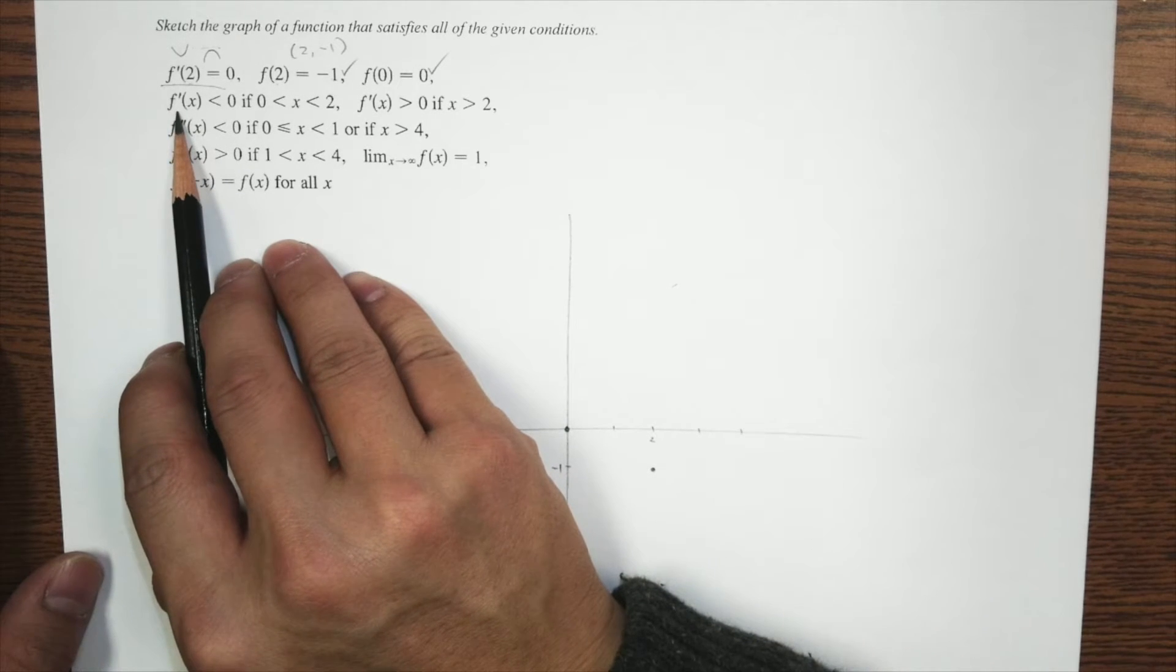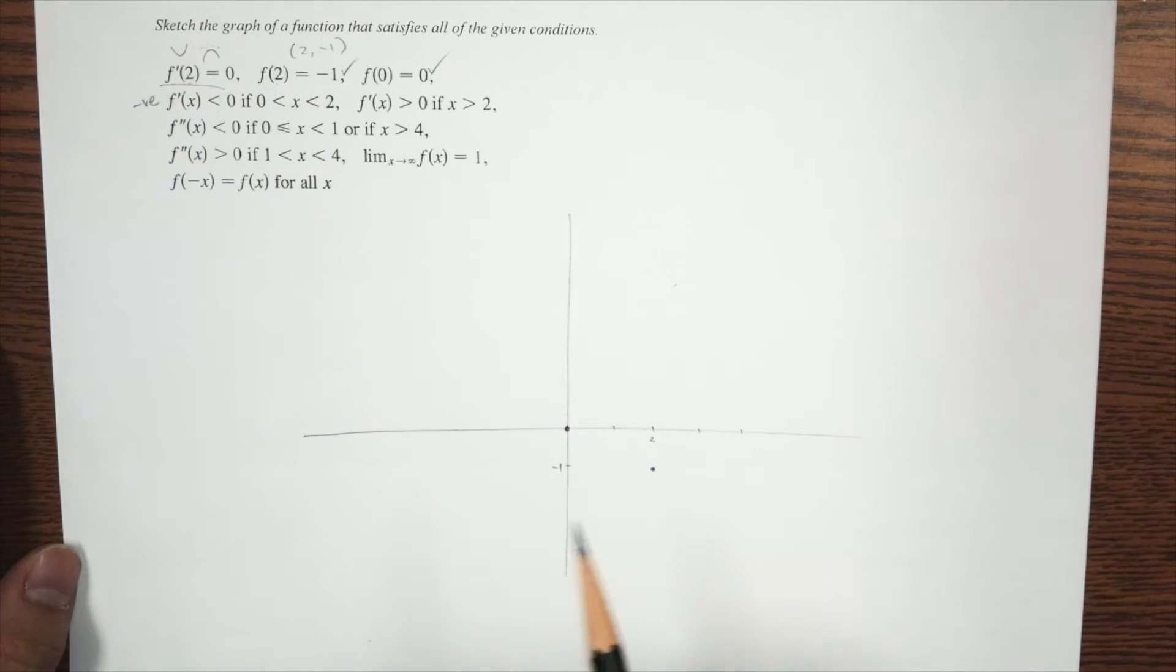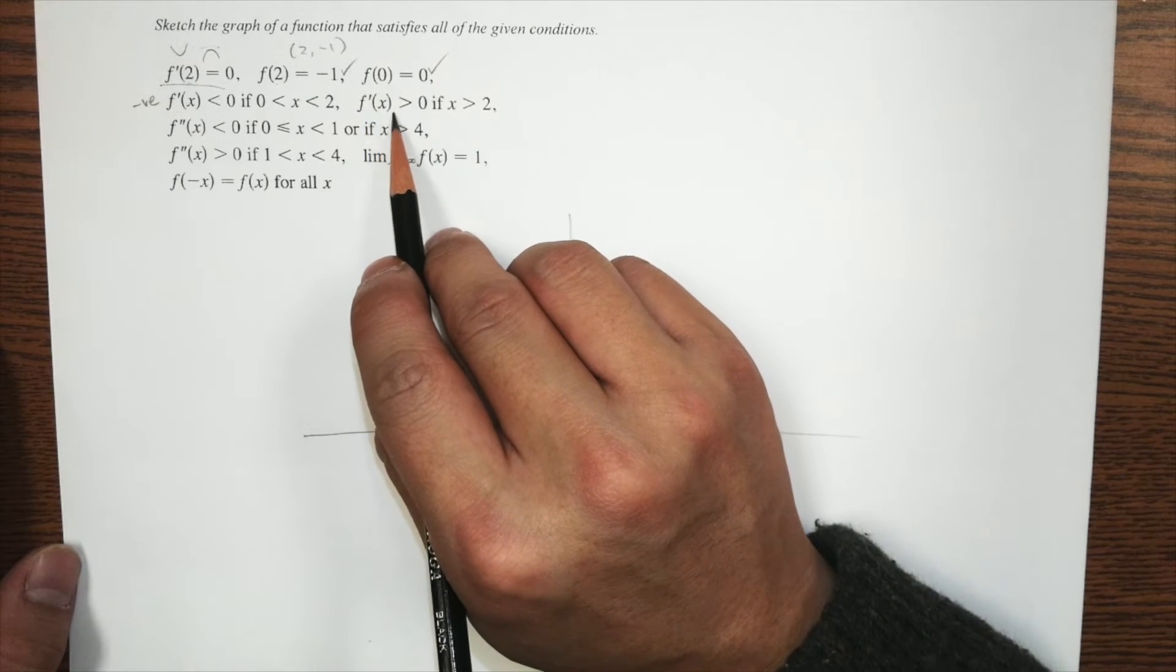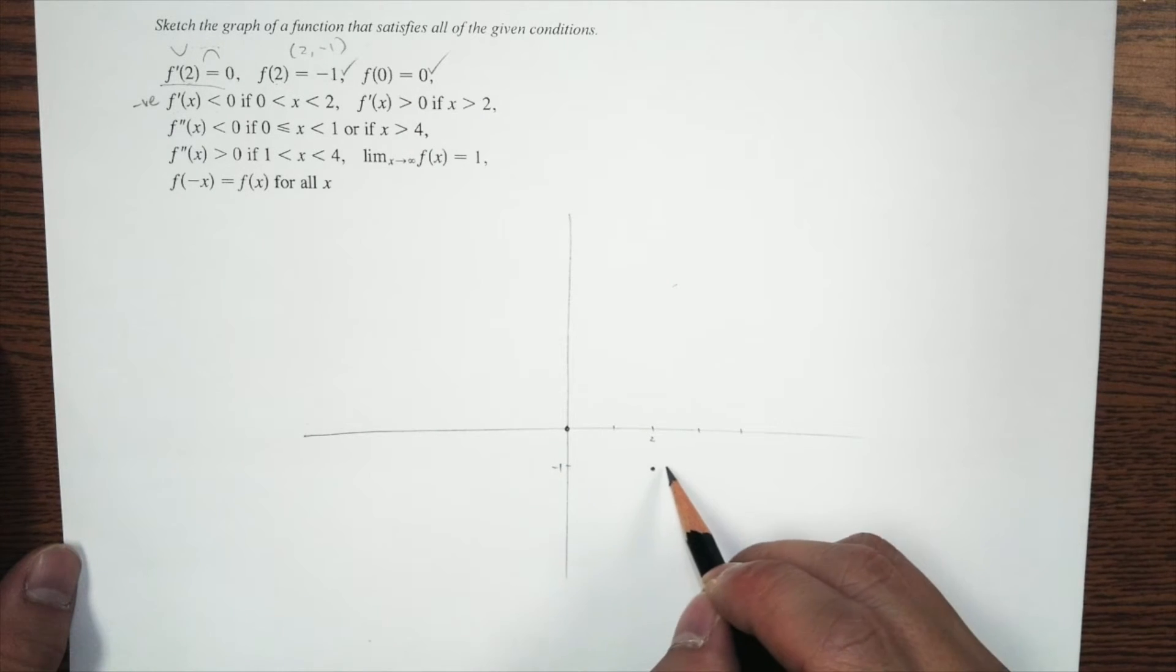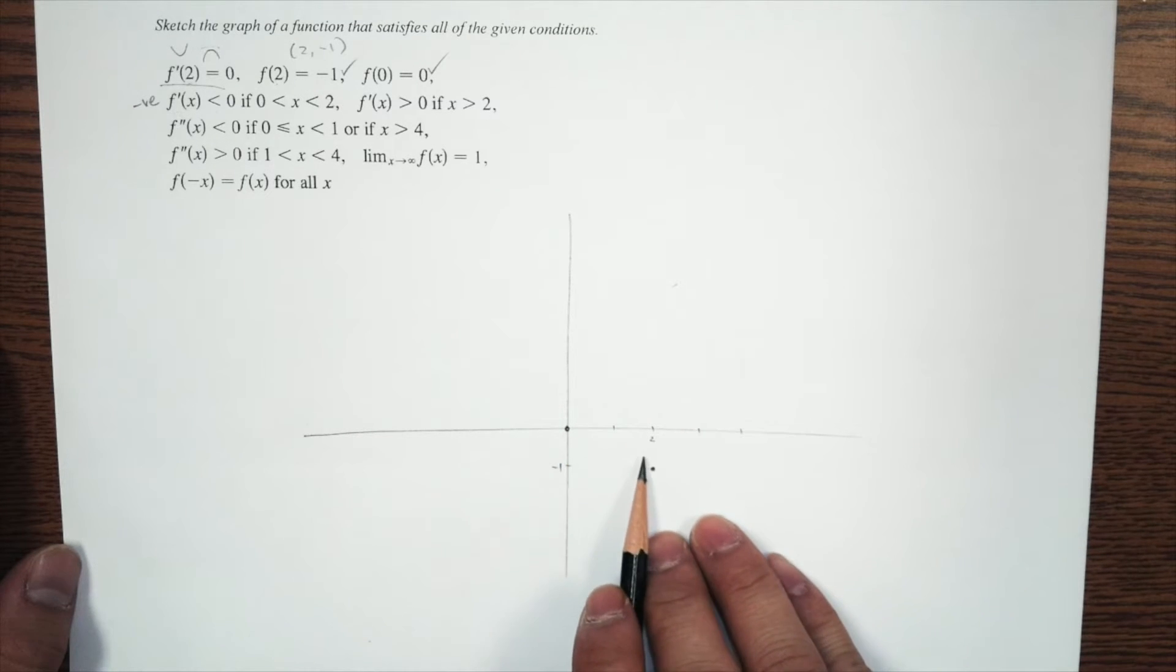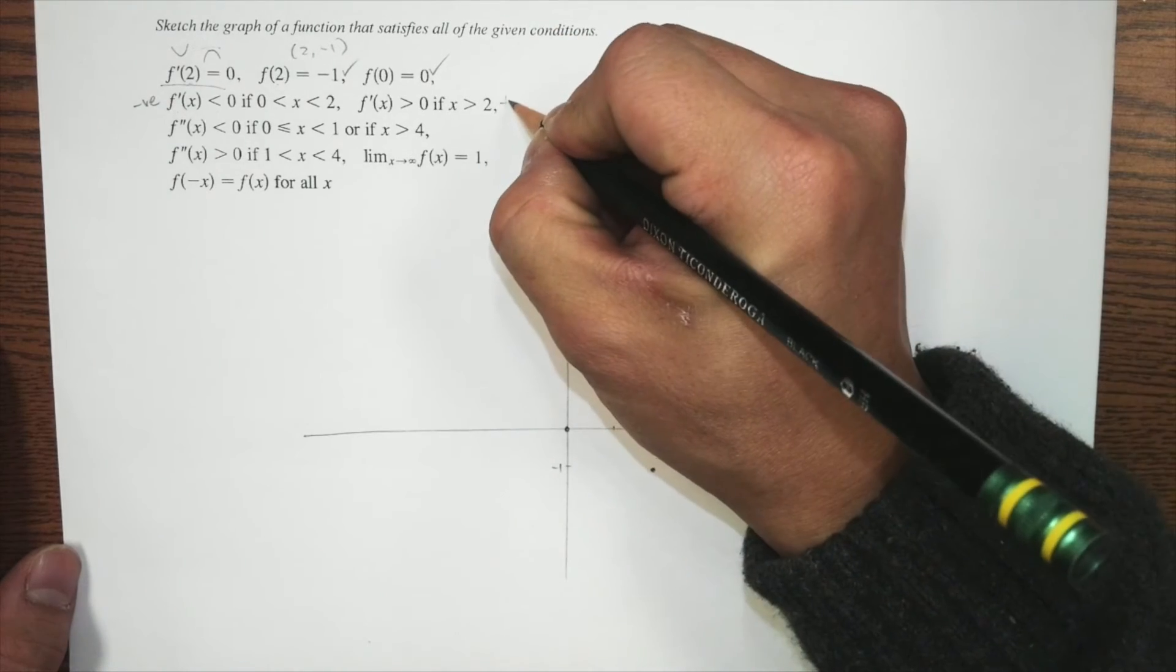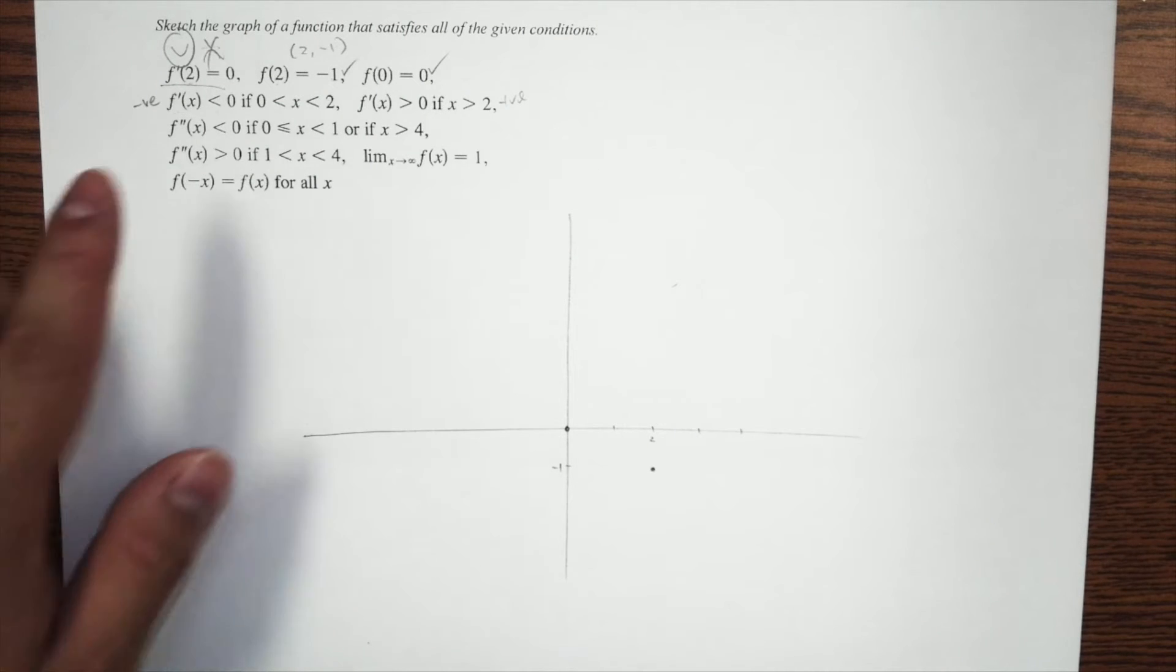So then we look at this criterion. We have f prime of x is less than 0 or negative when it is 0 to 2. So it's negative. So somehow it's decreasing. Seems like a minimum to me. And then f prime of x is positive when it is greater than 2. So it's definitely going to look like a minimum right here. So it's positive on the left of 2. It's negative slope when it's smaller than 2, between 0 and 2, and it's increasing slope when it's bigger than 2. So we know it's going to be this. It's not going to be that. It's going to be a minimum.